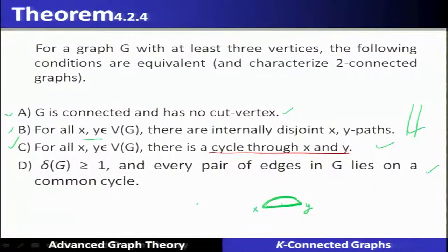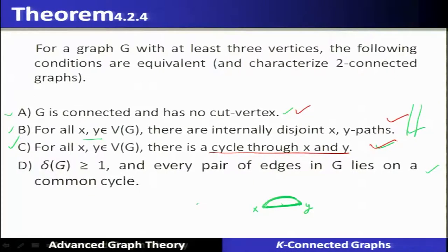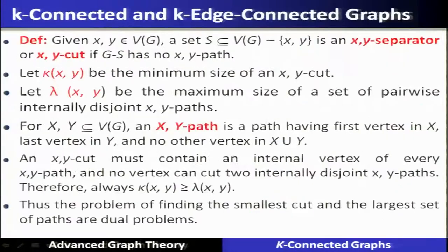All four conditions characterize two-connected graphs: a two-connected graph is connected and has no cut vertex; for all x-y pairs there are internally disjoint x-y paths; for every pair of vertices there is a cycle passing through them; and delta(G) ≥ 1 with every pair of edges lying on a common cycle. All four conditions are equivalent.